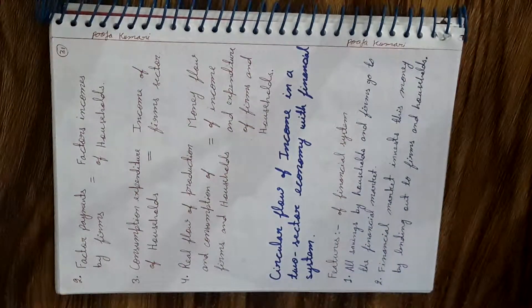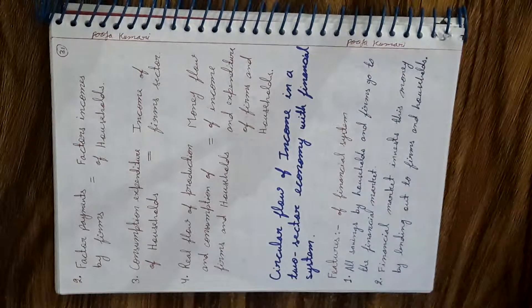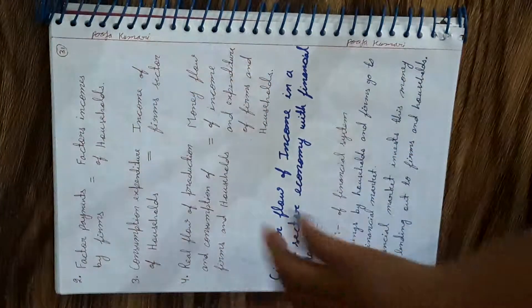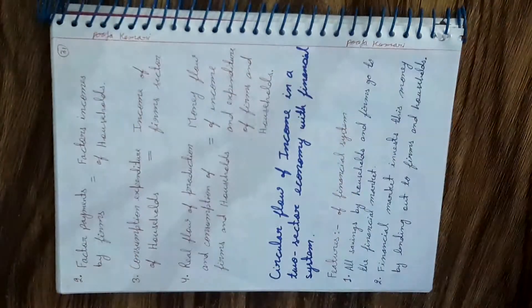Second relationship: factor payments by firms — wages, rent, interest, and profit — should be equal to factor incomes of households. For example, if I have given my land and receive rent of 5,000 rupees per month, then I as a household show 5,000 rupees as income, and the firm shows 5,000 rupees as expenditure. So factor payments by firms equal factor income of households.